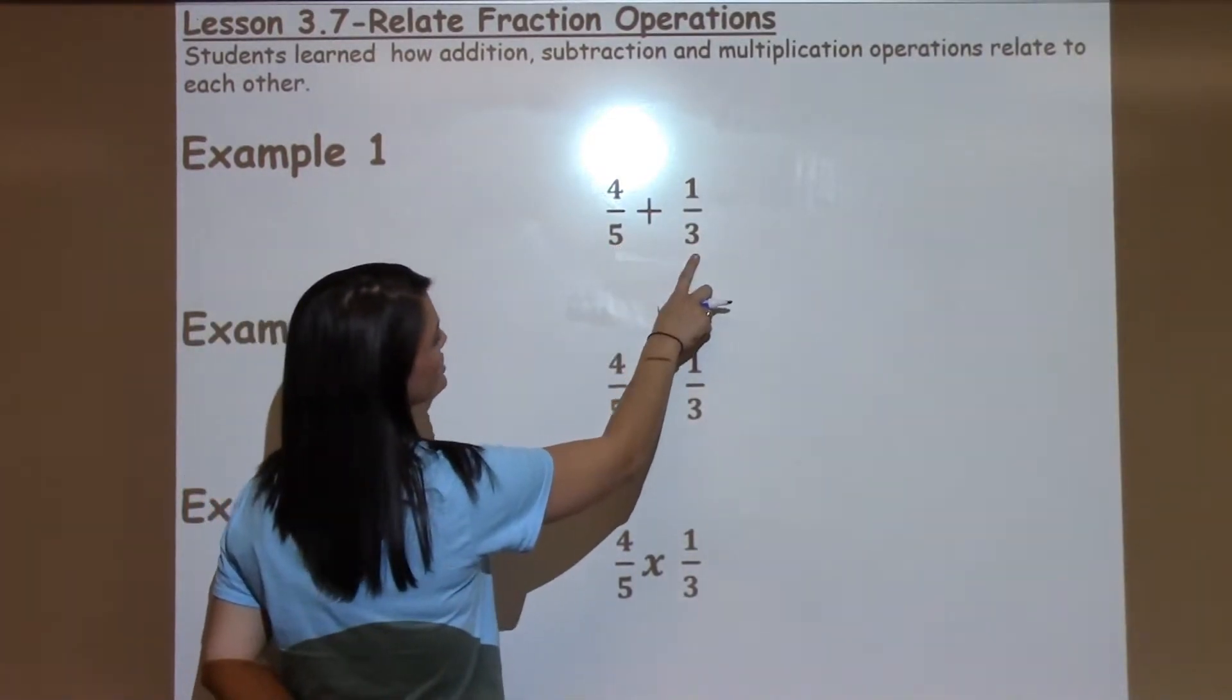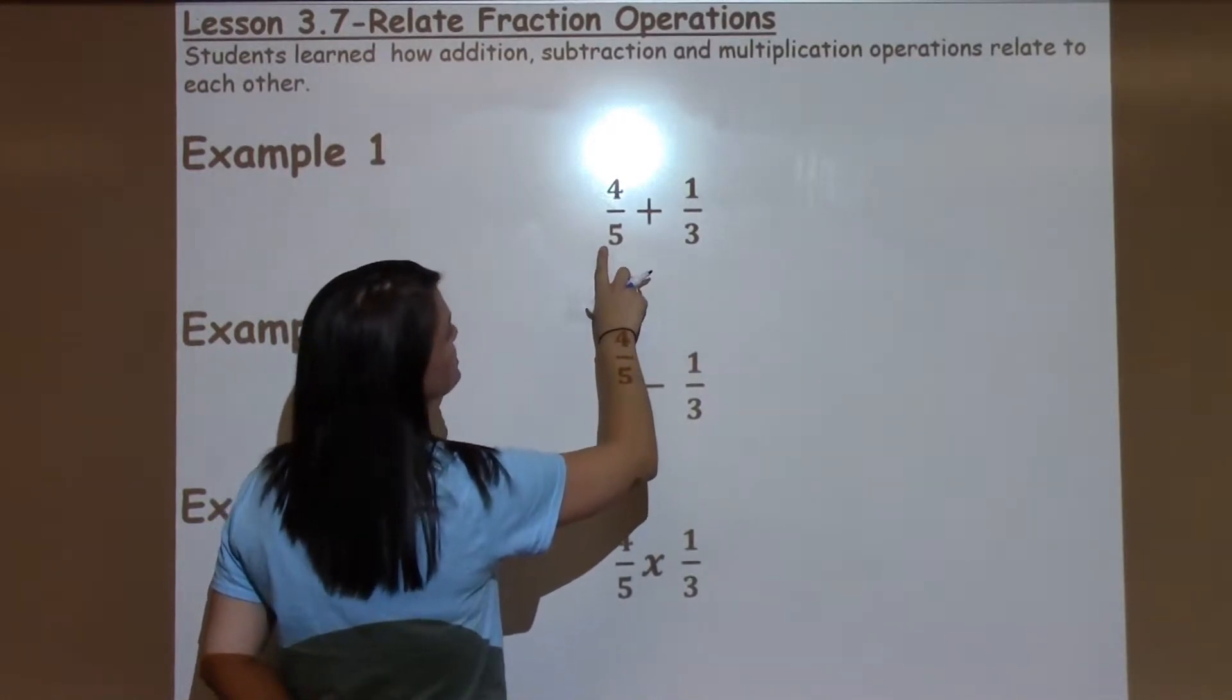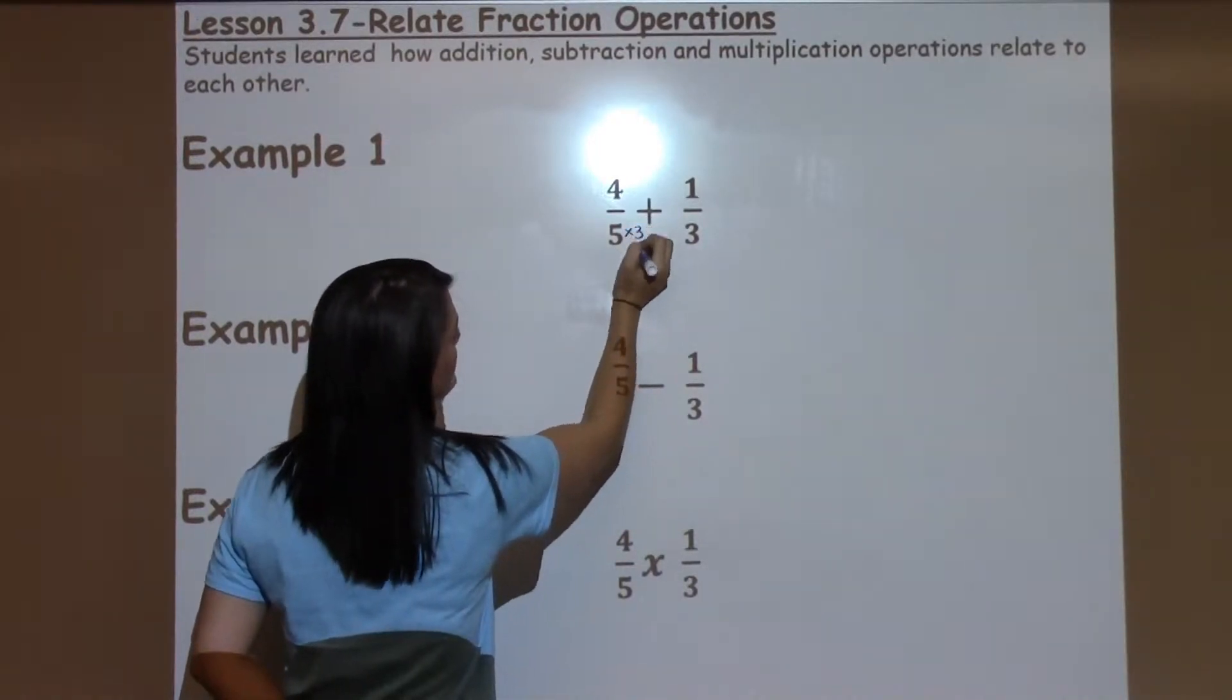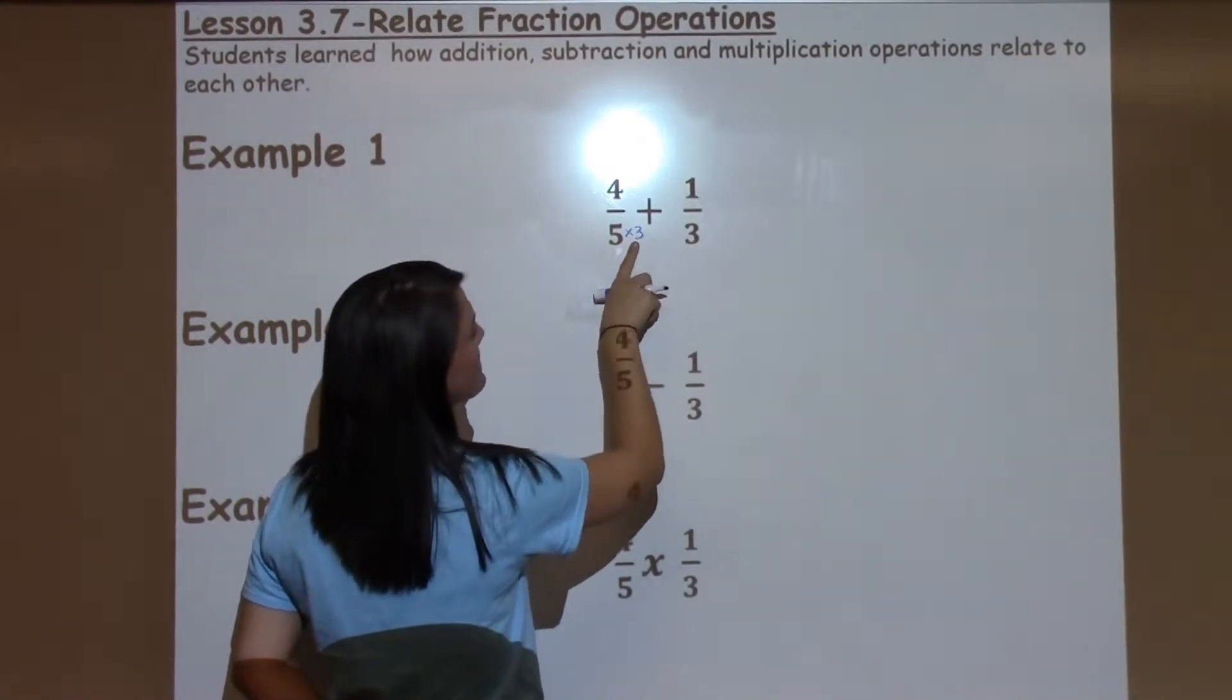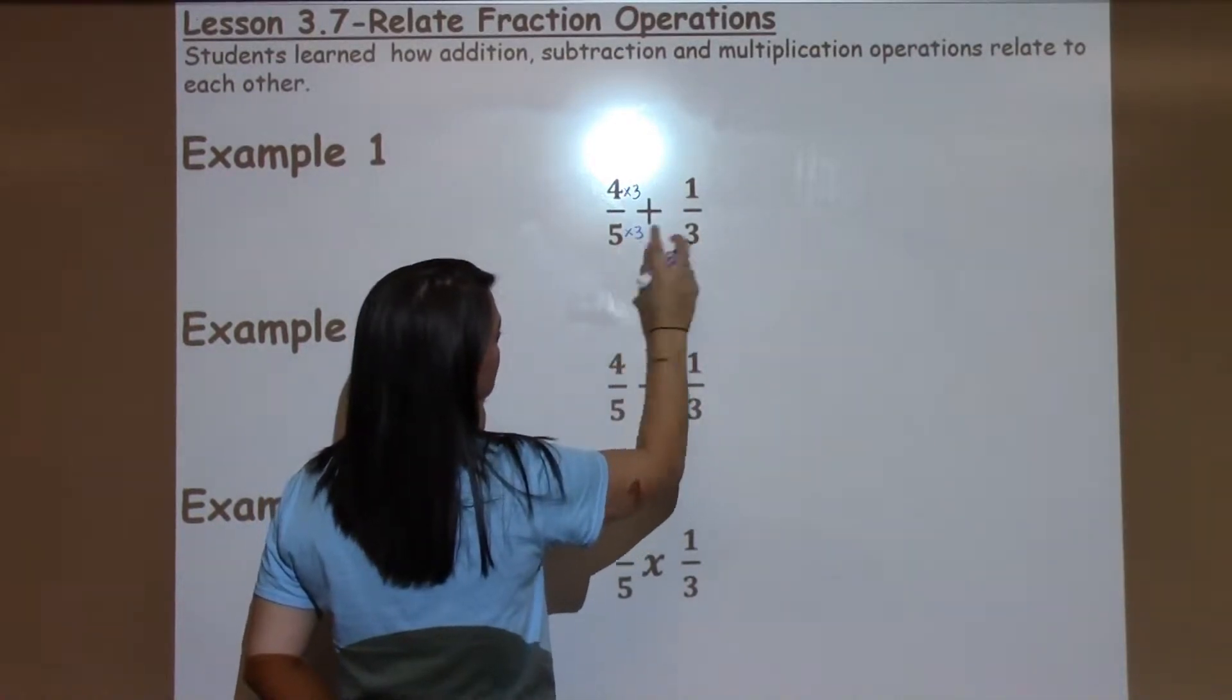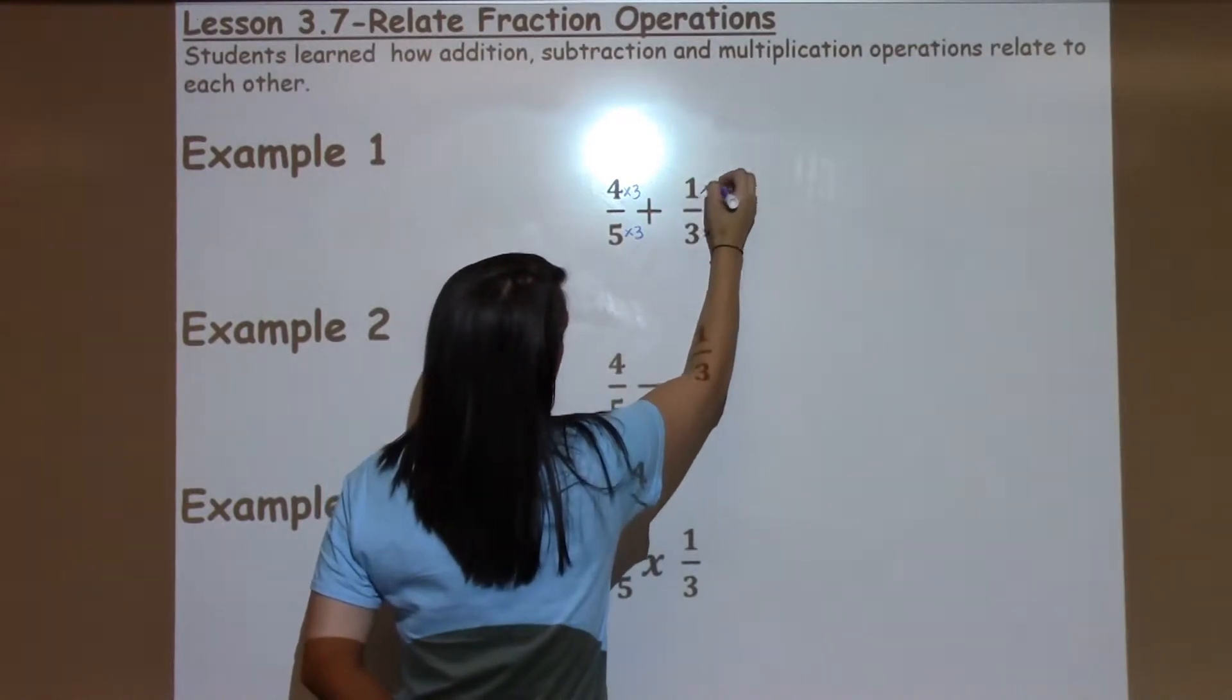When we add fractions, we learned in unit 1 that we have to make the denominators the same. So one strategy for doing that is to multiply by the opposite denominator, which is what I'm going to choose to do here. The opposite denominator of 5 is 3, so I times by 3. Anything I do to the bottom, I must do to the top. The opposite denominator of 3 is 5, so I'm going to times by 5. Anything I do to the bottom, I must do to the top.